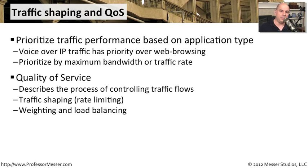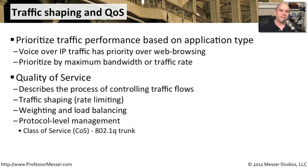For example, if many users are hitting your web server, you might set up 10 different servers behind the scenes, with everyone hitting one load balancer that splits the load across all 10 servers. You can also manage quality of service at the protocol level — if you're trunking VLANs from one switch to another, there is a class of service bit in the Ethernet header you can use. You could say this VLAN carries voice over IP traffic and give it a higher priority than another VLAN sending normal data.